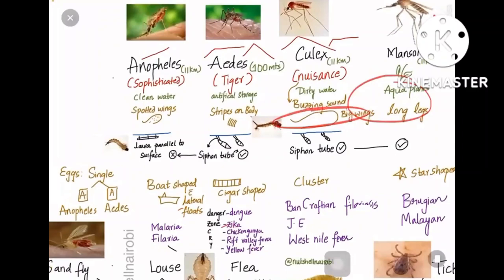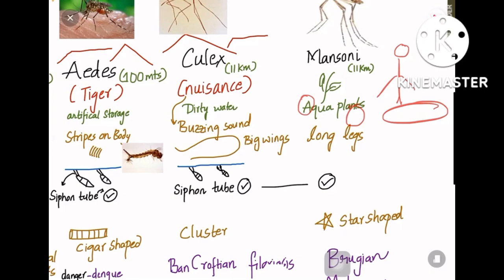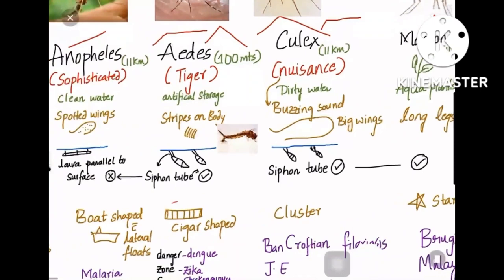The identification points are: spotted wings for Anopheles, stripes on the body for Aedes, buzzing sound and big wings for Culex, and long legs for Mansonia — remember 'a man has long legs.' Now coming to one important point: the siphon tube.